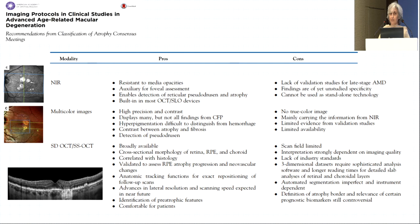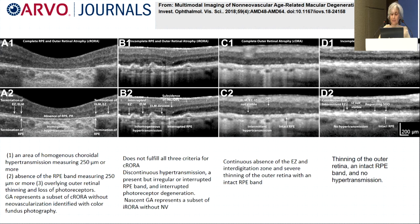Near-infrared reflectance and OCT are increasingly important because OCT shows choroidal hyper-transmission very well. The atrophy study group's multimodal imaging of non-neovascular AMD grading goes in reverse: D1 is the earliest sign with incomplete loss of outer layers, through to the most advanced — A1 — which is complete RPE and outer retinal atrophy (cRORA). Most studies now try to stop the conversion from incomplete to complete RPE and outer retinal atrophy.